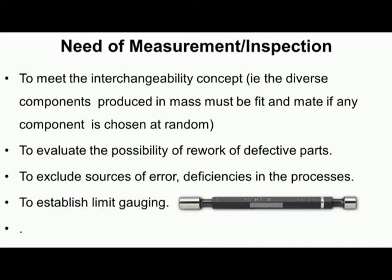Inspection helps evaluate the possibility of reworking defective parts — checking whether rework can make them acceptable — and helps exclude sources of error and deficiencies in the process. Limit gauging is also established through inspection: in manufacturing, instead of actually measuring dimensions, we only need to know whether they are within acceptable limits. To establish limit gauging, inspection must be conducted.